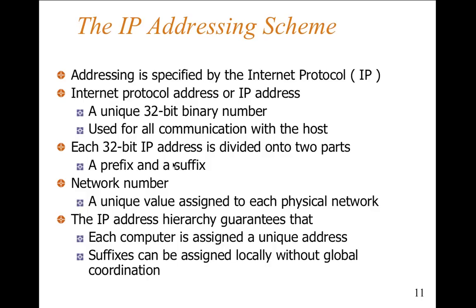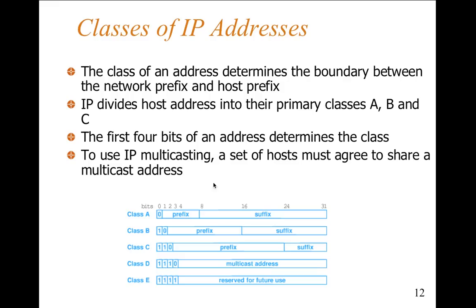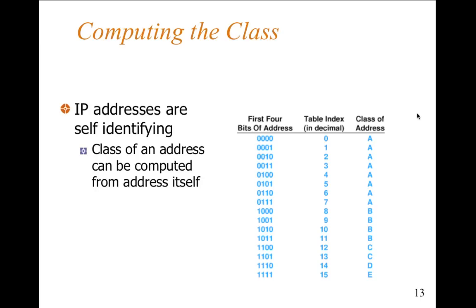Each computer is assigned unique values. There's a hierarchy to it — we've seen the hierarchy before where the address determines the boundary between the networks, the network prefix, and the host prefix. It divides out into classes A, B, and C. The different classes actually meant something in the past; now they don't really mean that much. Even some of the subnets don't have the same significance as they used to.